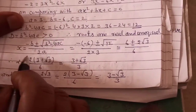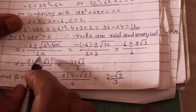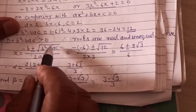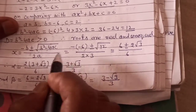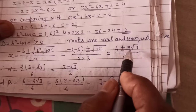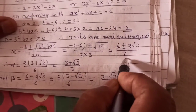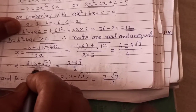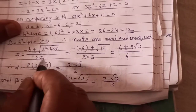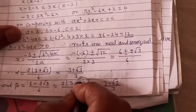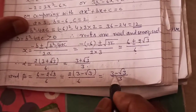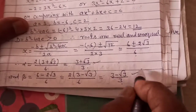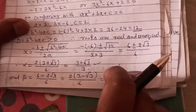If discriminant is greater than 0, then roots are real and unequal. We will find the value of x by applying the Sridhachar formula: x equal to minus b plus minus under root b squared minus 4ac upon 2a. We get 6 plus minus 2 under root 3 upon 6. x has two values: alpha equal to 3 plus under root 3 by 3, and beta equal to 3 minus under root 3 by 3. These are called the roots of this equation.